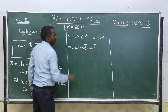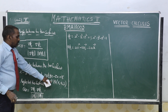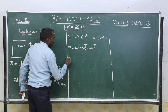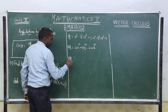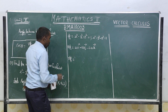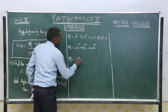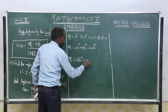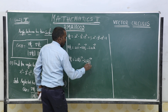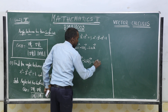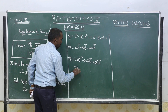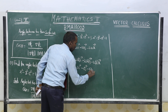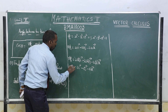Now evaluate ∇φ₁ at the point (6, 4, 3): substituting x=6, y=4, z=3 gives 2(6)i - 2(4)j - 2(3)k = 12i - 8j - 6k. So ∇φ₁ at (6,4,3) = 12i - 8j - 6k.